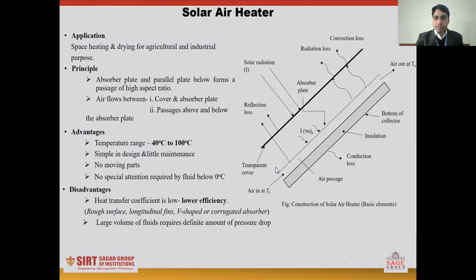The initial temperature of the air is represented by Ti, and then we get the final temperature of the air after passing through the solar air heater. The temperature range achieved by this solar air heater is about 40 to 60 degrees Celsius.